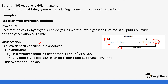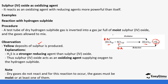Sulfur dioxide is the one supplying oxygen to hydrogen sulfide. Note that dry gases do not react — that is why we use moist gases, because we need water to enable production of the ions.